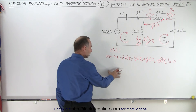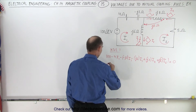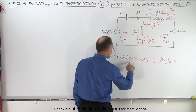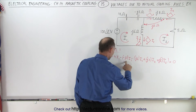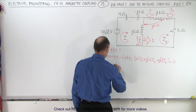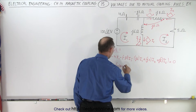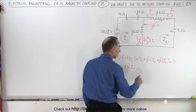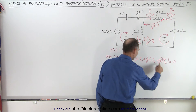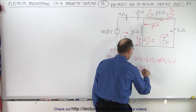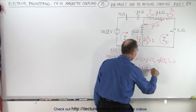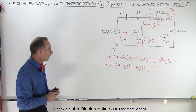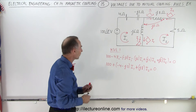Now let's simplify KVL1. That gives us 100. For I1, we have minus J6, plus J3, and minus 4, which gives us minus 4 minus J3 times I1. For I2 we have plus J2 and plus J6, giving us plus J8 times I2. That all adds up to zero. That's the simplified form of that equation.